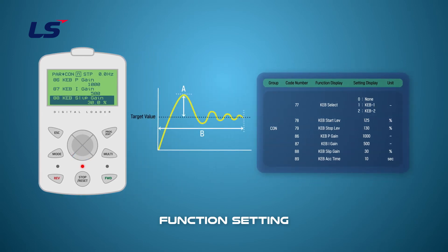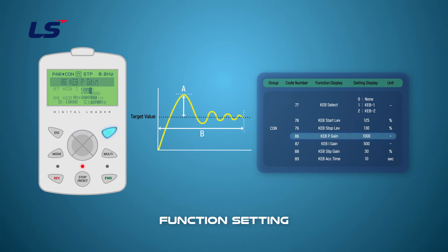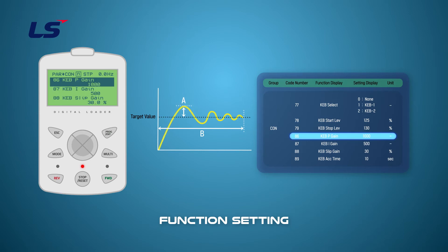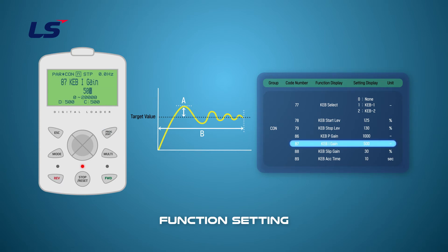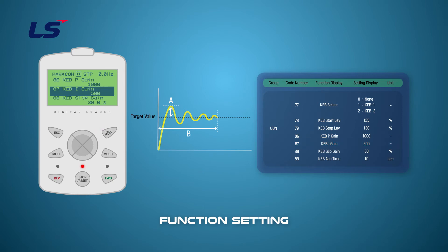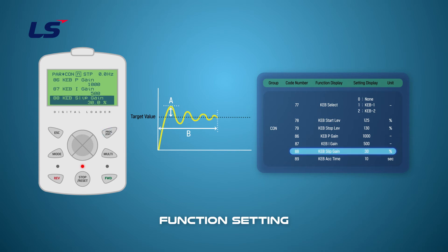Three gain settings are available: P, I, and slip. KEB P gain is set in CON 86 and plays a role of reducing overshoot, reducing the time to reach the target value. KEB I gain is set in CON 87 to eliminate deviation and serves to reduce the steady-state error. KEB slip gain prevents low voltage trip from occurring by designating the range for estimating the target value during the initial operation of KEB control, and is set in CON 88.